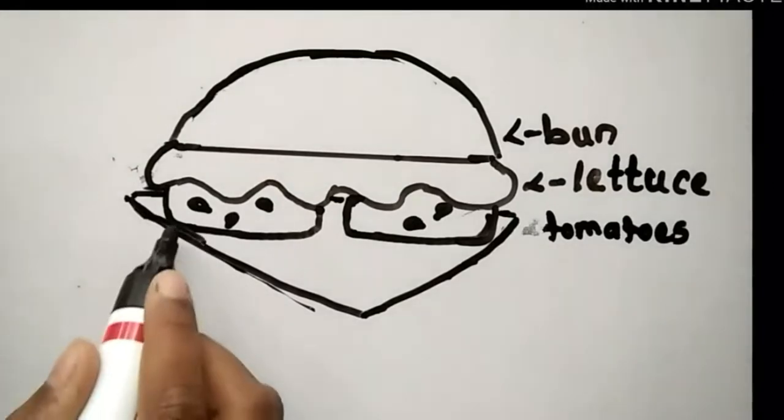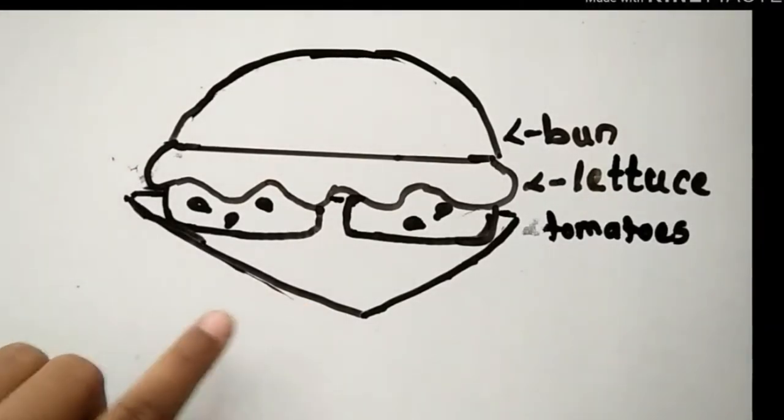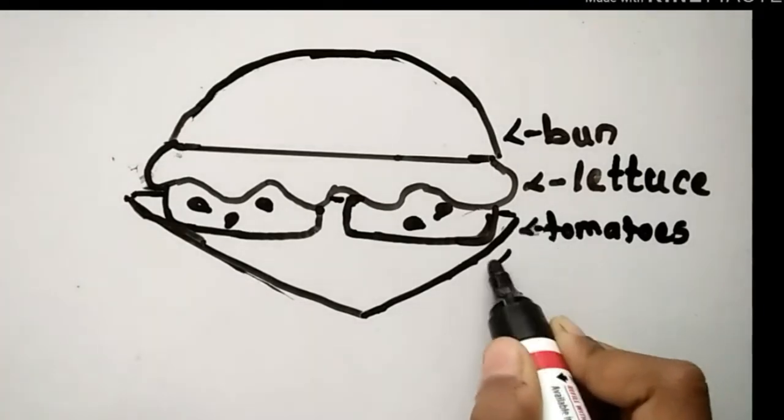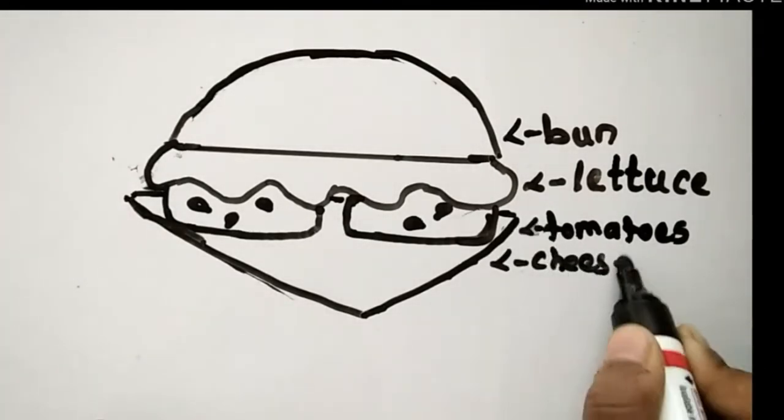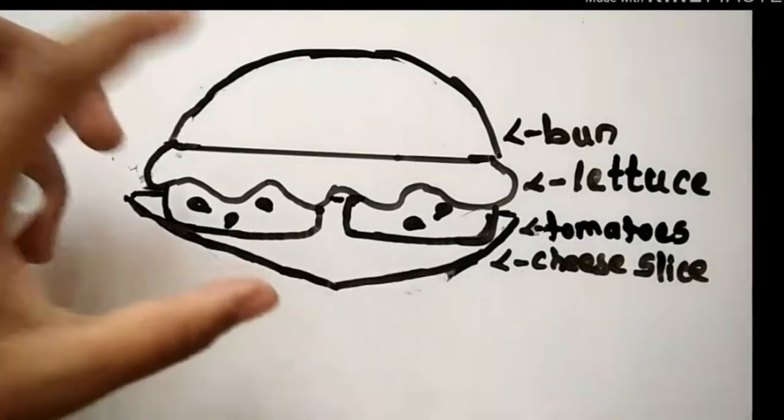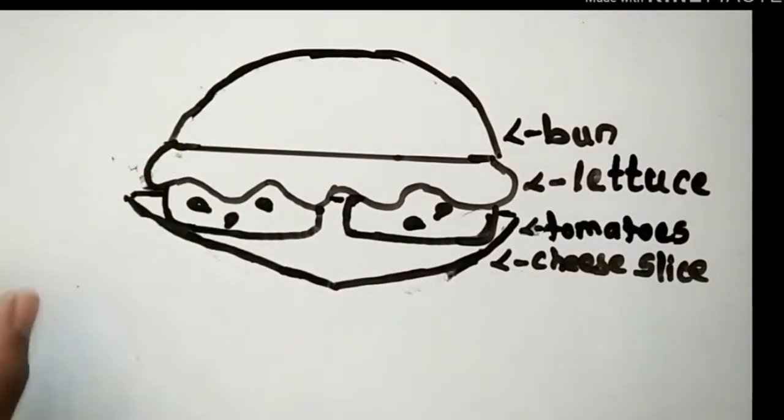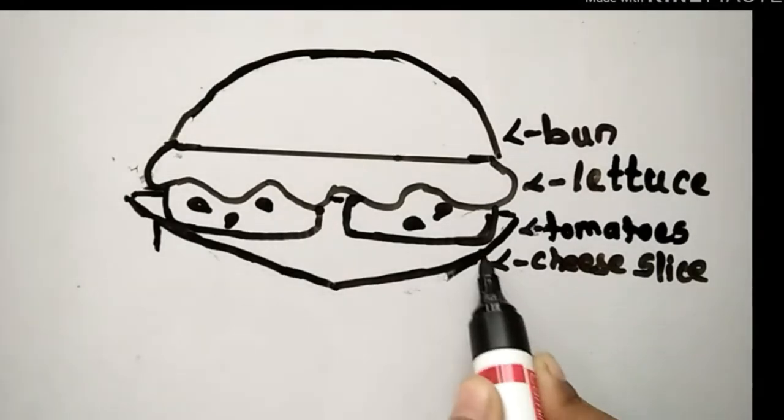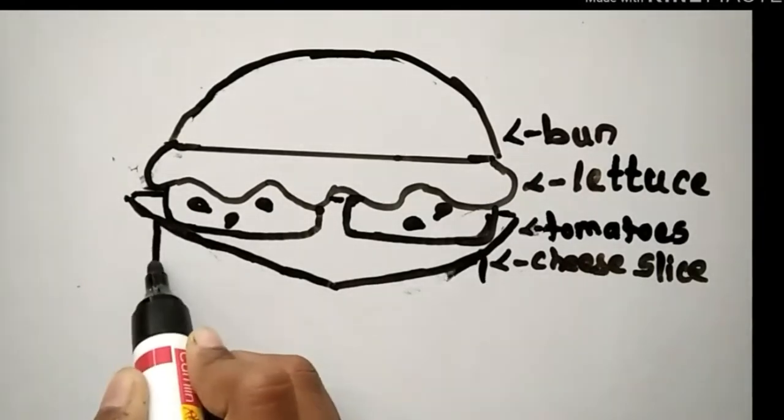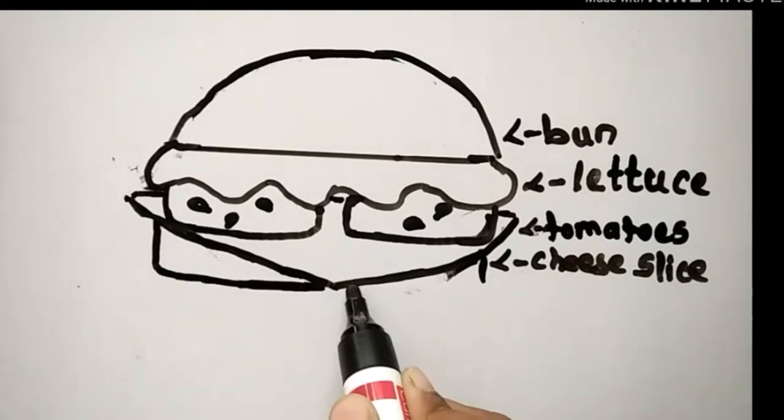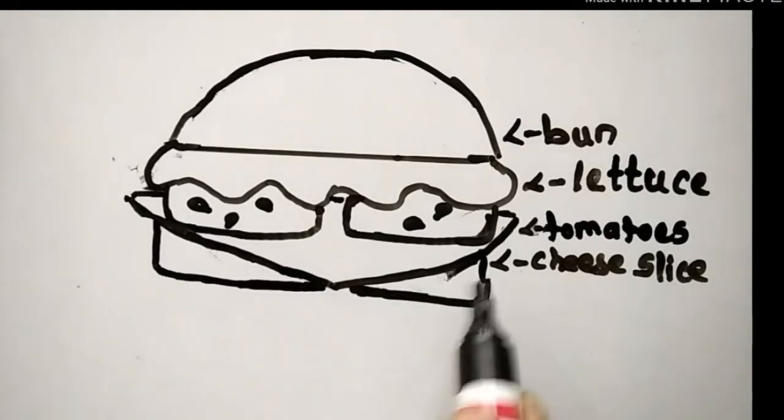And I have also drawn the second line to the first line, like this. Yes, it's called a cheese slice. Well, I think that it's a little big, so I am going to do it a little small. Okay, now the cheese slice is looking a little good and it's better.